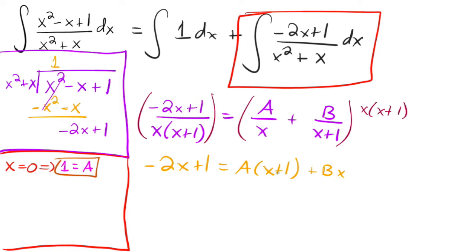And then you would 0 out this one by letting x equal to negative 1. And so if you let x equal to negative 1, you would get 2 plus 1 is 3. 3 is equal to negative b. So b is equal to negative 3. So that's the way we've been doing it. But I want to show you a different way because we're going to need it later.